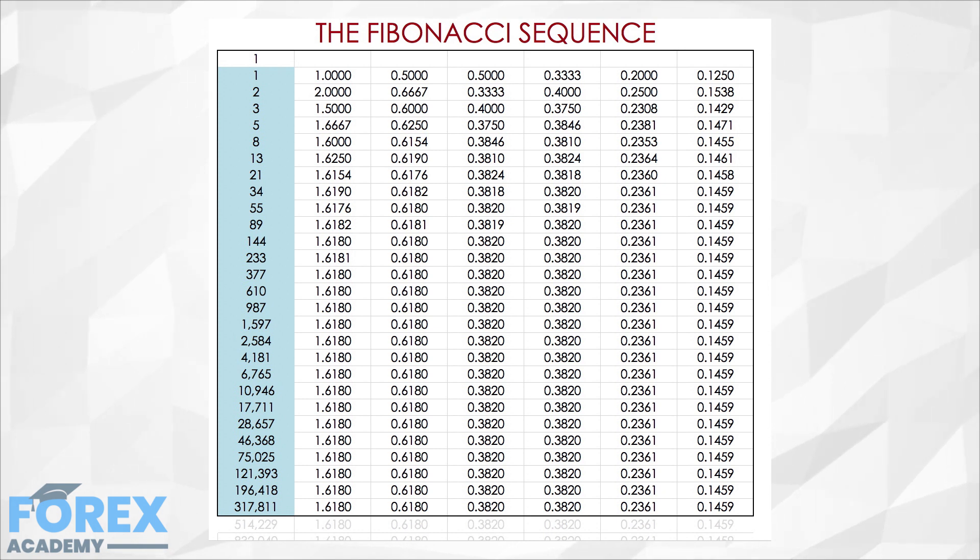0.236 is the result of a Fibonacci number divided by its third next. 0.1459 results from the division of four distanced Fibonacci numbers, and we could go on forever. To these ratios, trading software adds the 0.5 and 0.75 levels and the complementary extensions.